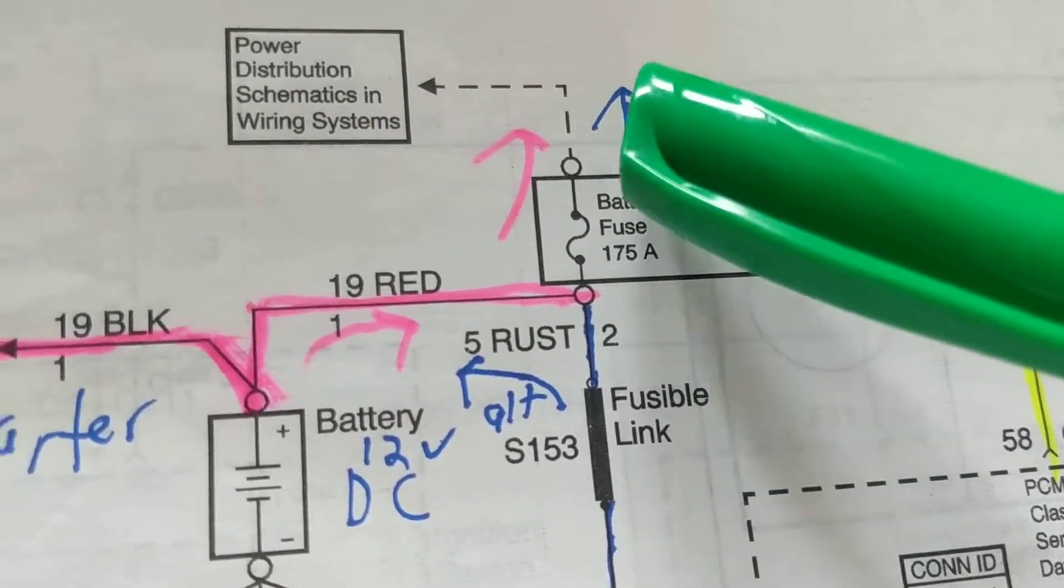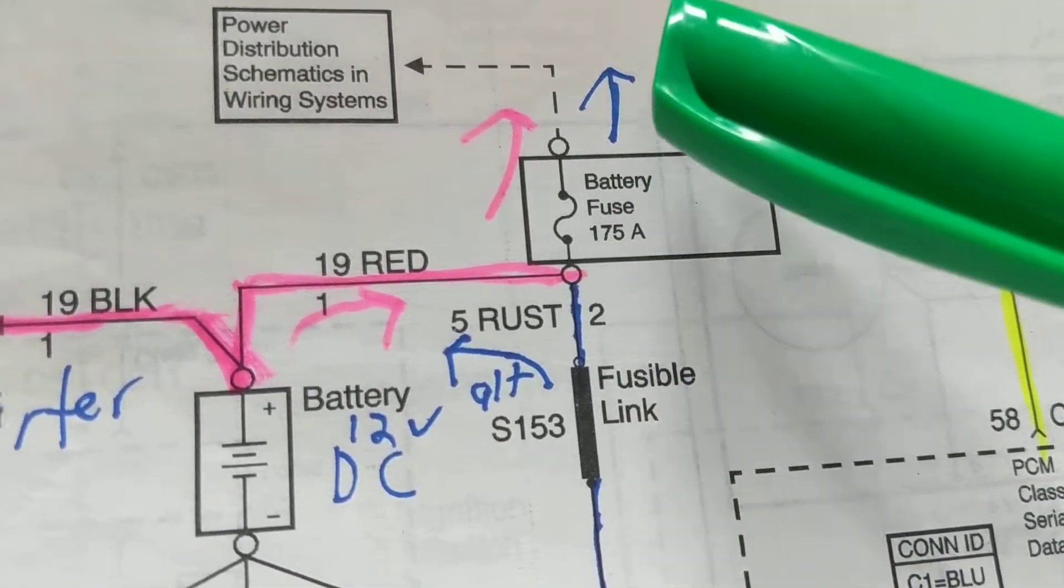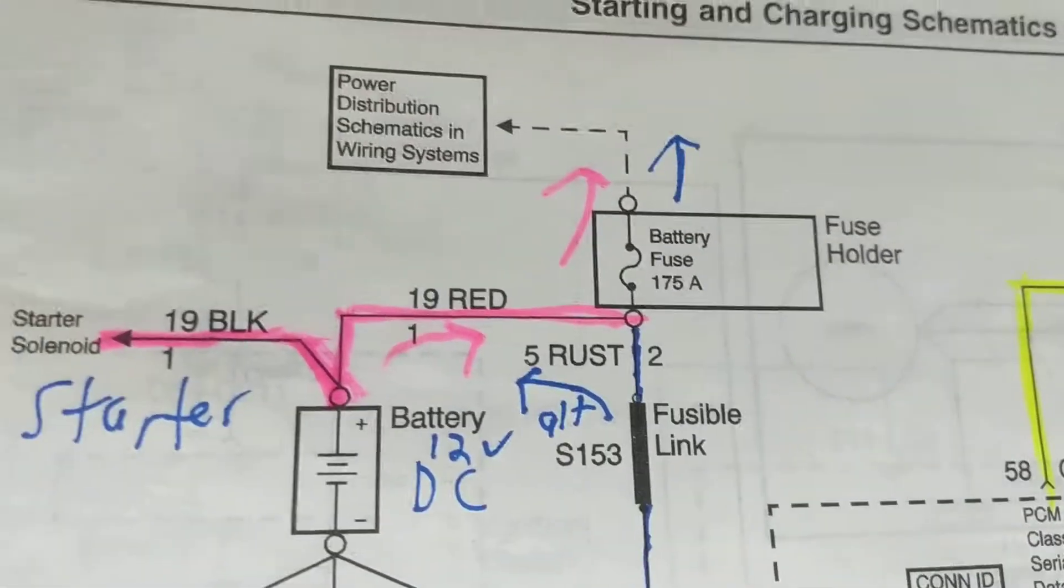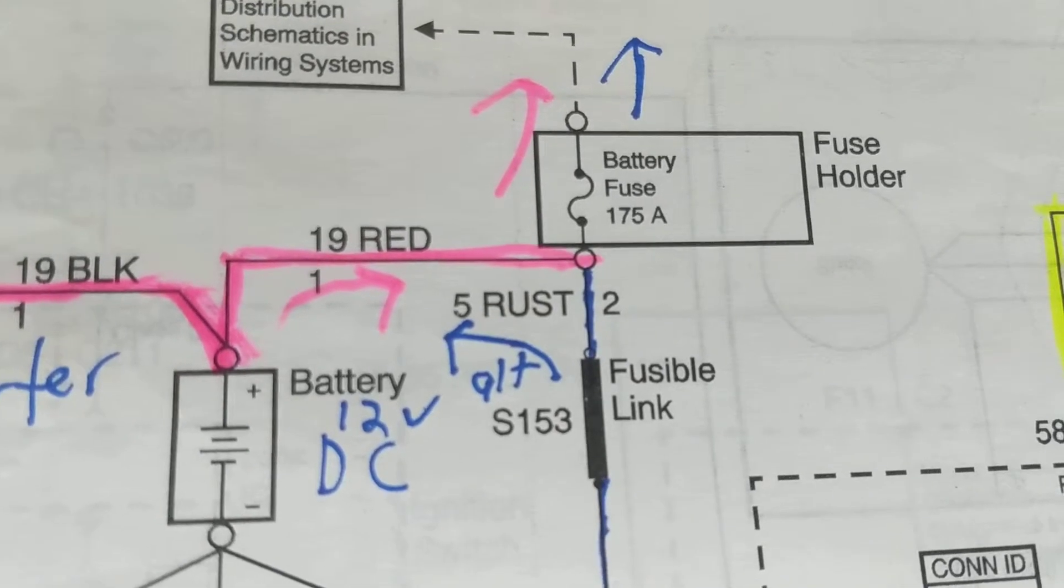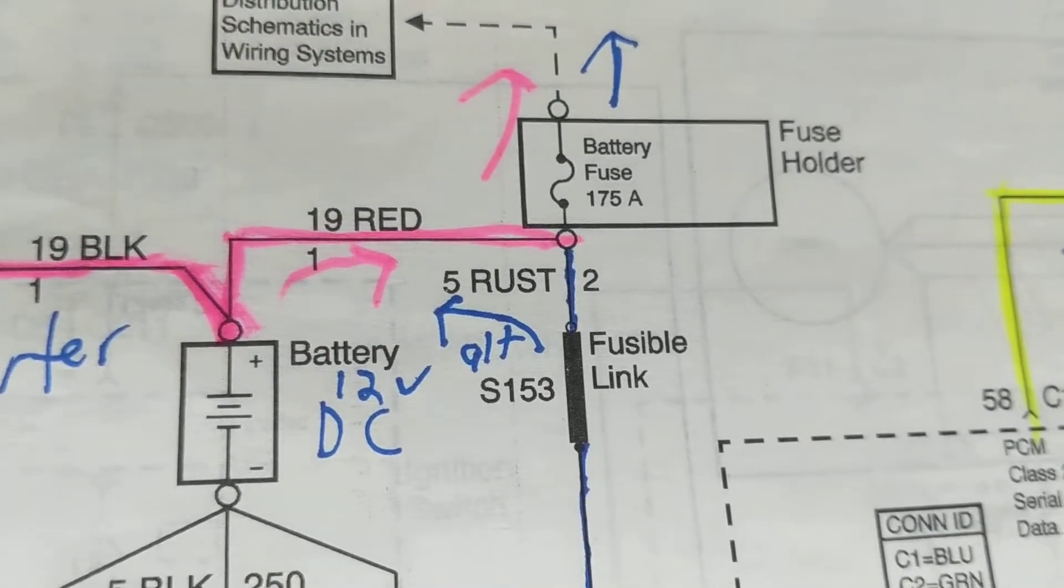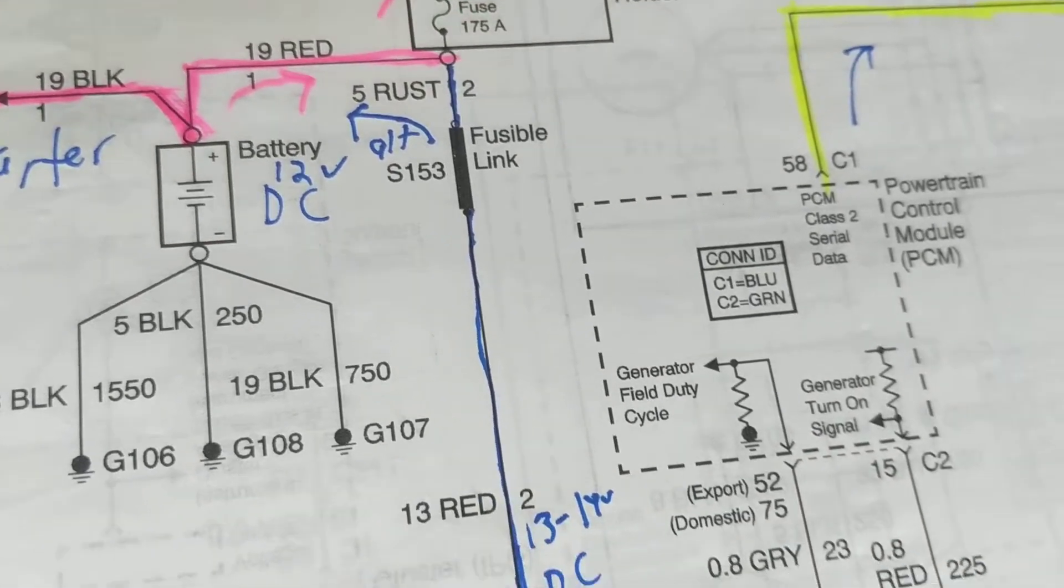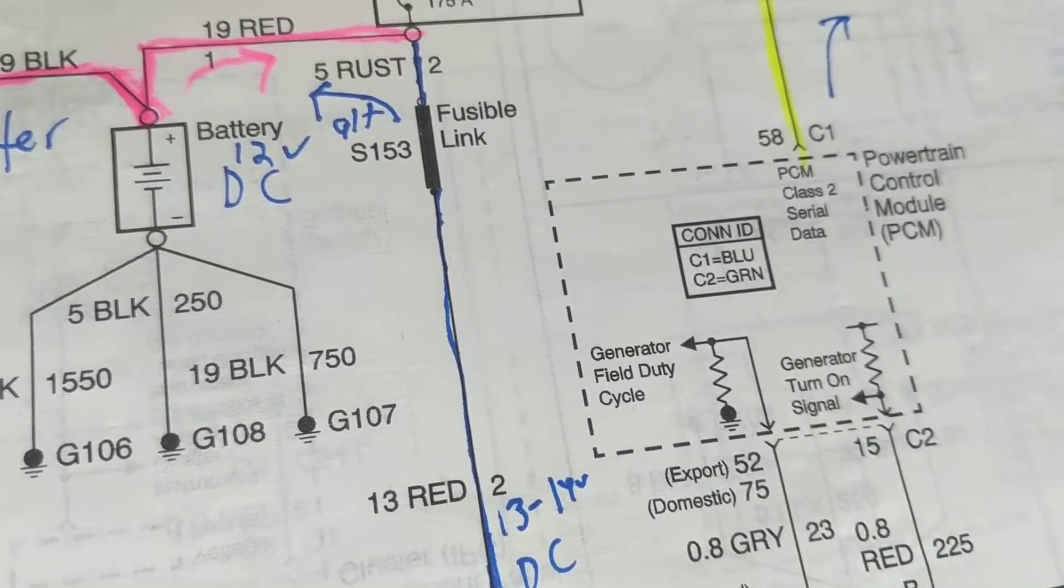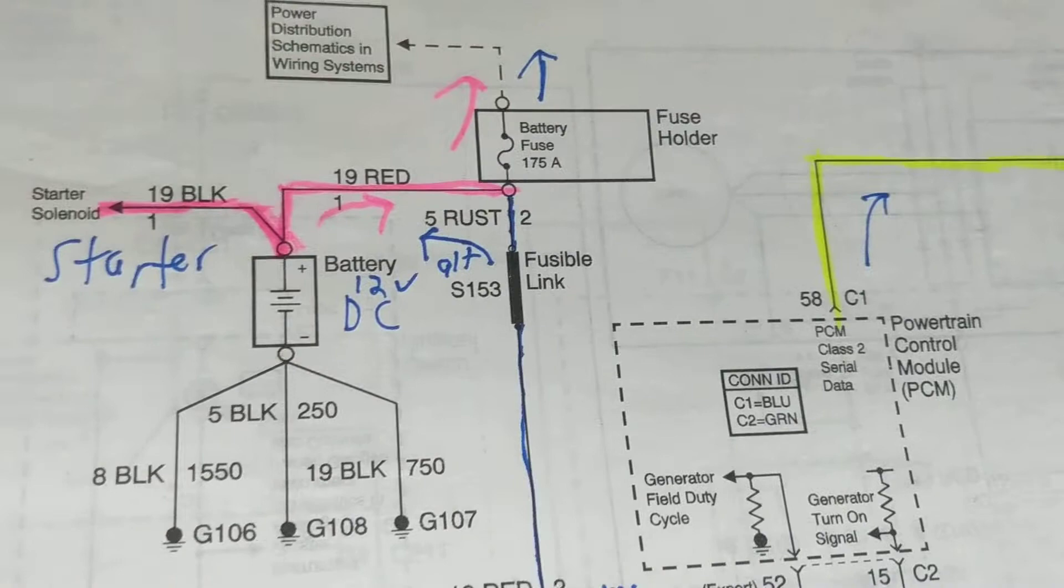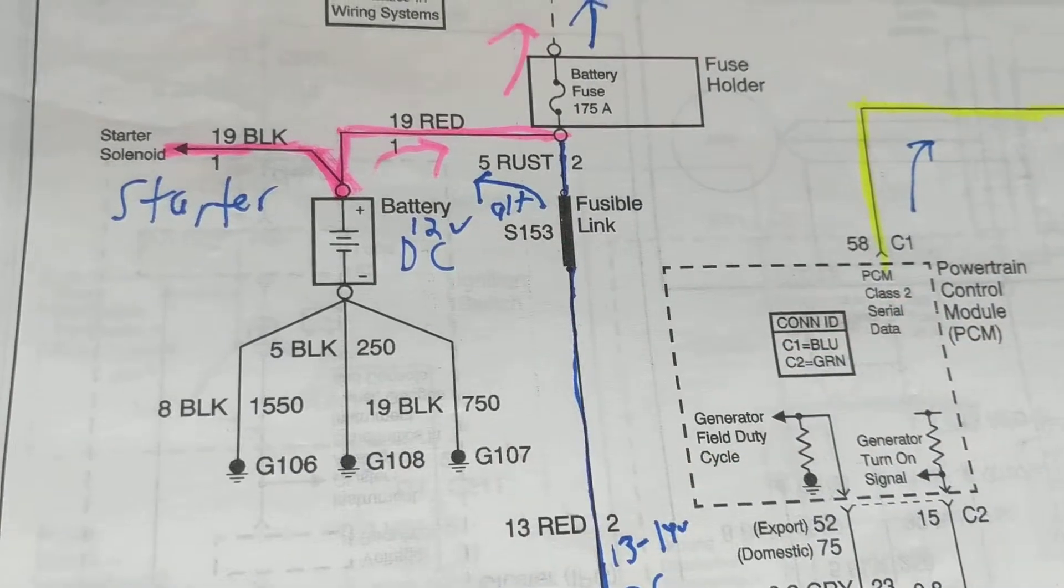We have to make the ignition control module supply spark to create compression. This power distribution goes through the huge fuse holder of 175 amps. The modules give grounds to the fuel injection, which makes it open and close at the right moment to give fuel into the cylinders. The battery did its task - it got the engine starting.